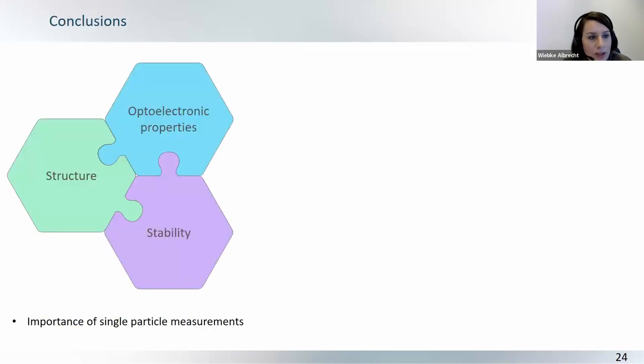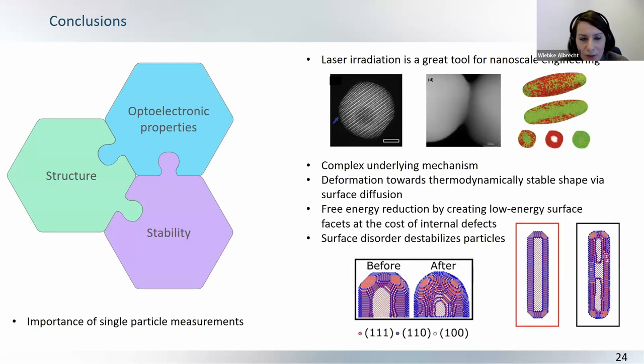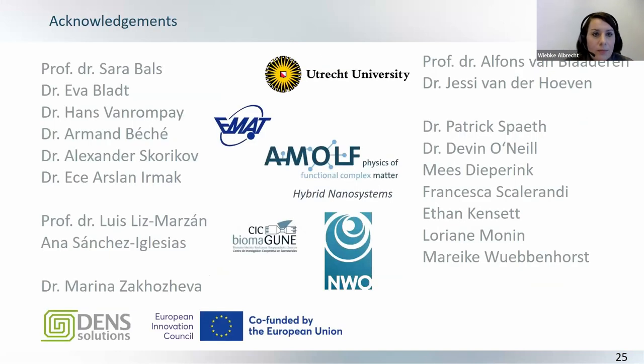So, with that, I would like to conclude, and I hope that I've shown you that the structure properties and stability are highly intertwined in these nanoscale systems, that it's important to perform single particle measurements, and moreover, that laser radiation, and specifically tuning the excitation scheme, is a great tool for nanoscale engineering, that the mechanism how these transformations happen is actually quite complex, that, on the one hand, the particle deforms towards a thermodynamically stable shape via surface diffusion, but, at the same time, it also tries to create as many low-energy surface facets as possible, at the cost of internal defects, which are relatively cheaper for FCC crystals. And we've seen that surface disorder actually destabilizes the particles. And, with that, I would like to thank my collaborators. That has really been a work with the electron microscopy people involved. I would like to thank also my group, and I would like to thank you for your attention.